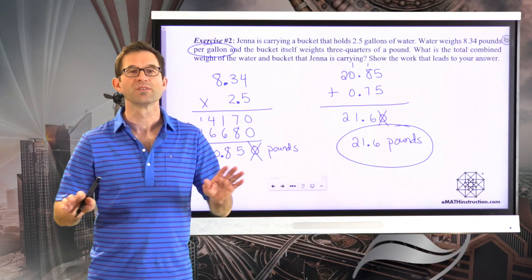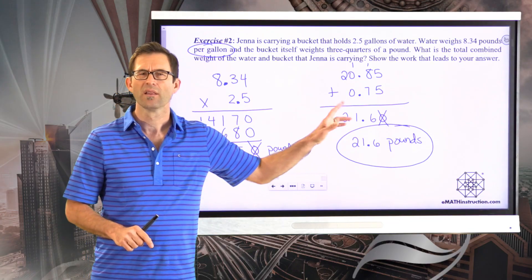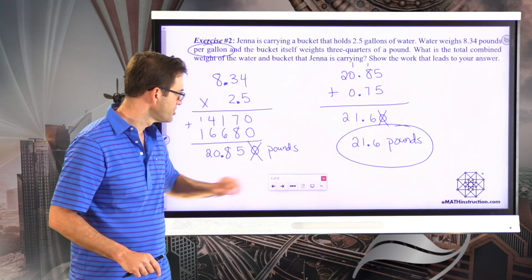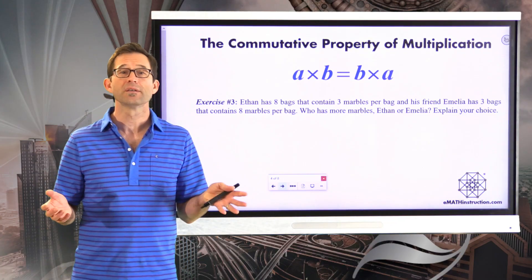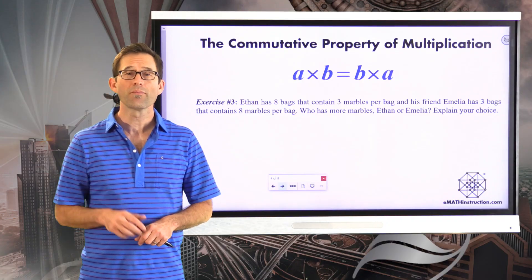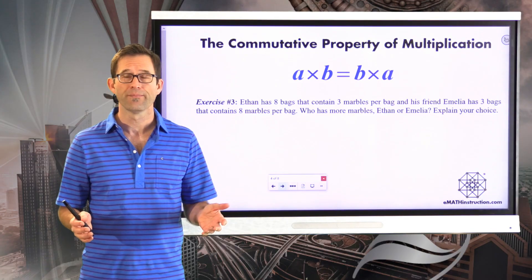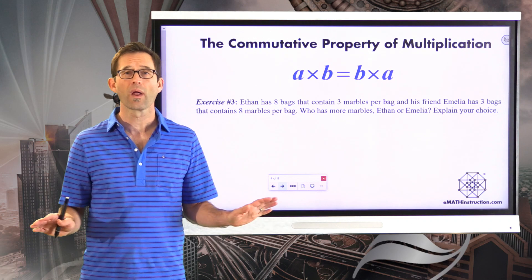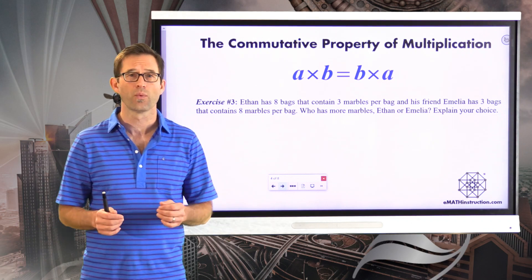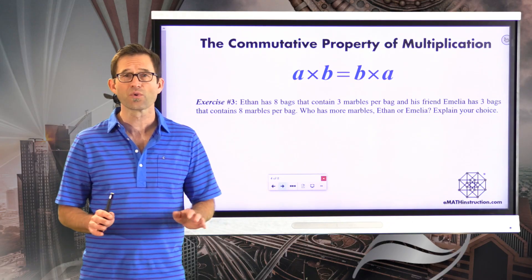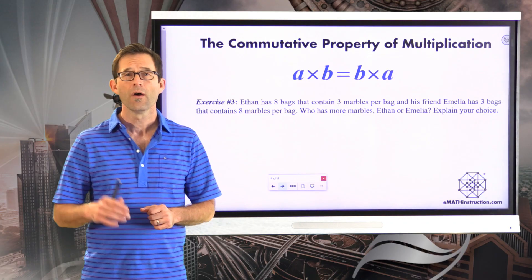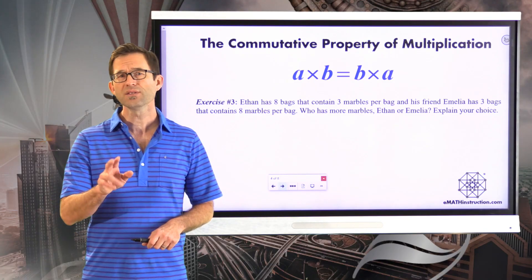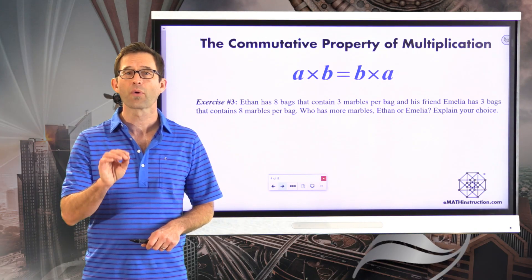Nice applied problem involving decimals — both multiplying decimals and a little addition. One of the most important properties of multiplication is the commutative property, which basically says that when you have two numbers, the order in which you multiply them is totally irrelevant. 3 times 4 is 12, and 4 times 3 is 12. It works regardless of whether the numbers are whole numbers, fractions, or decimals.